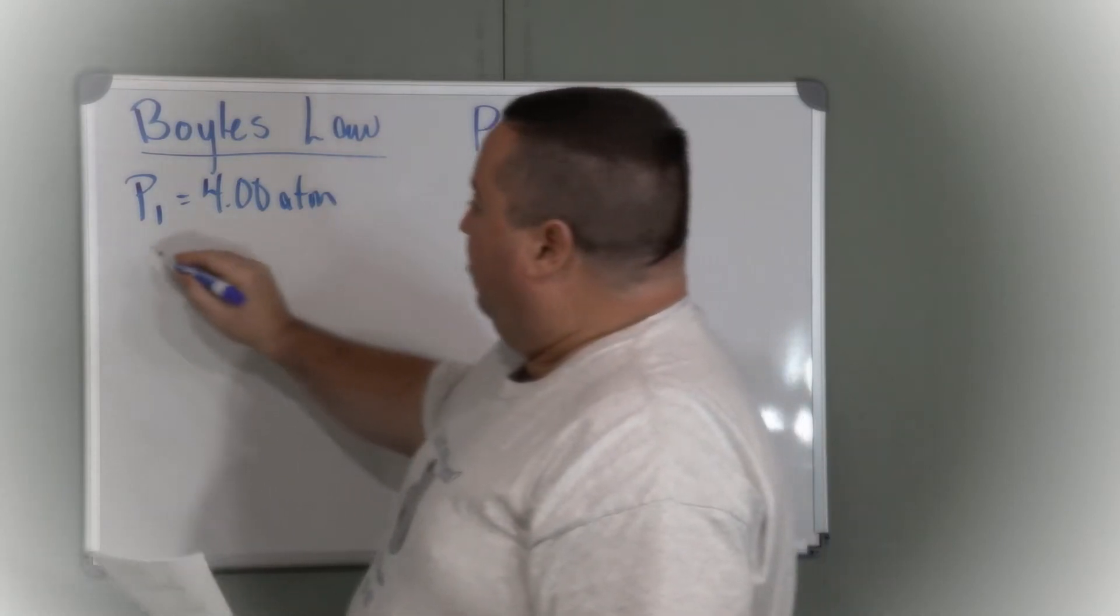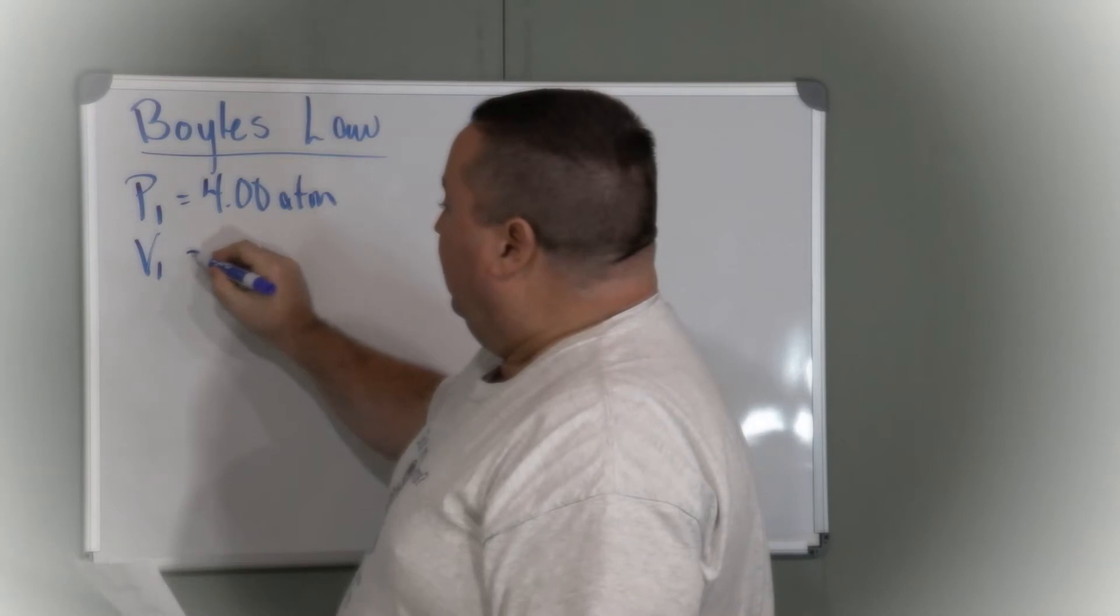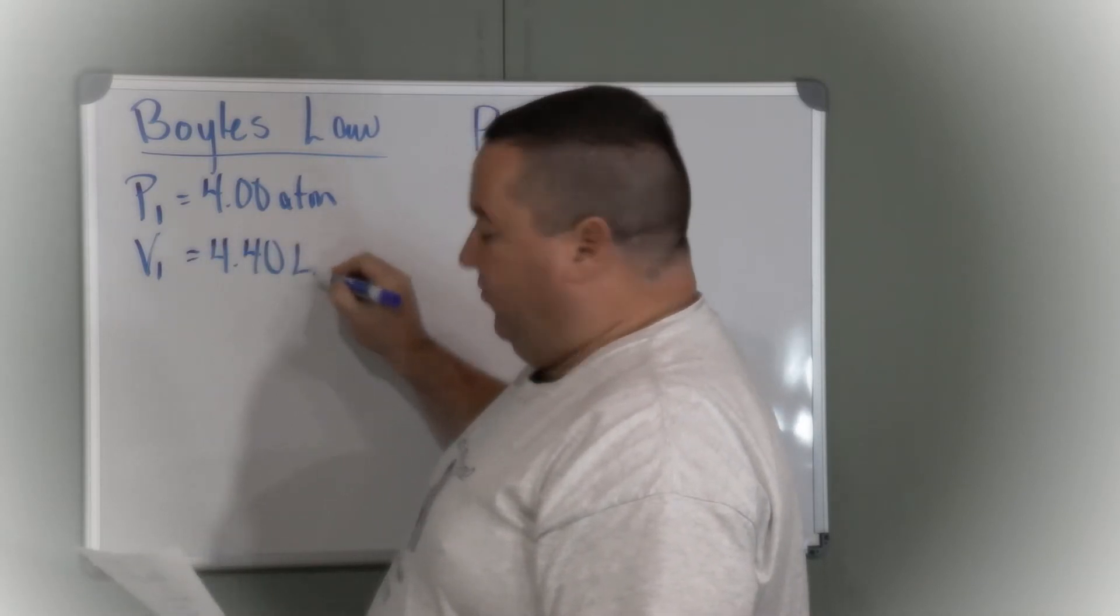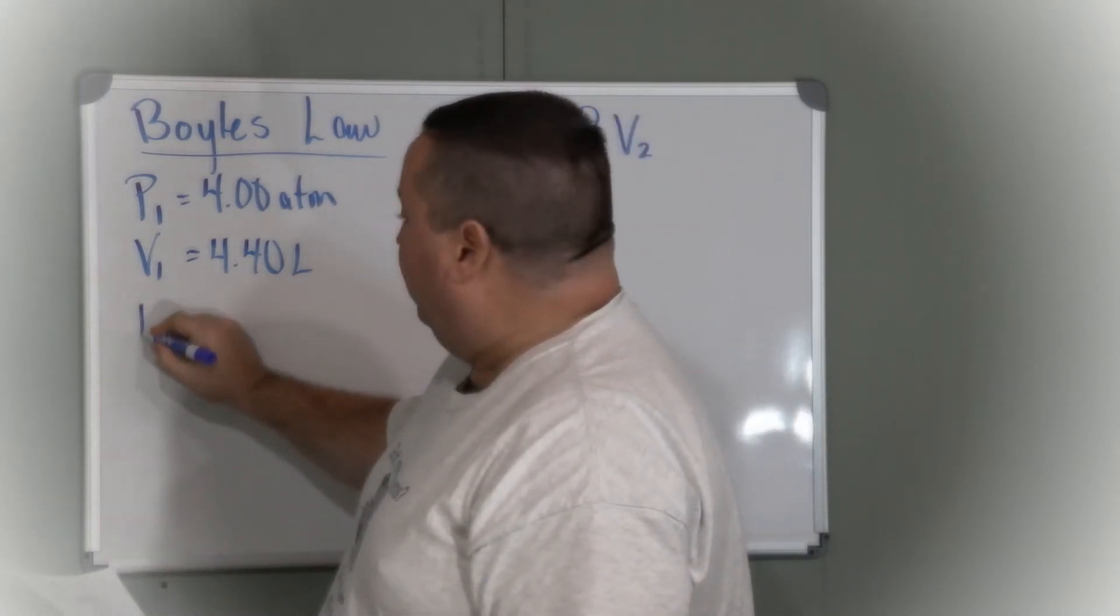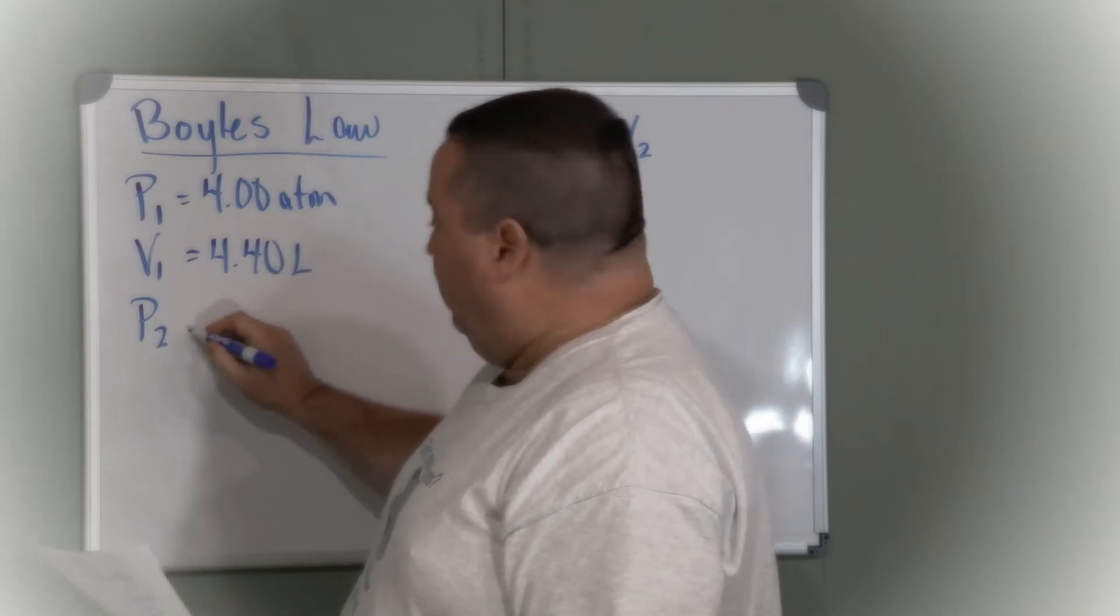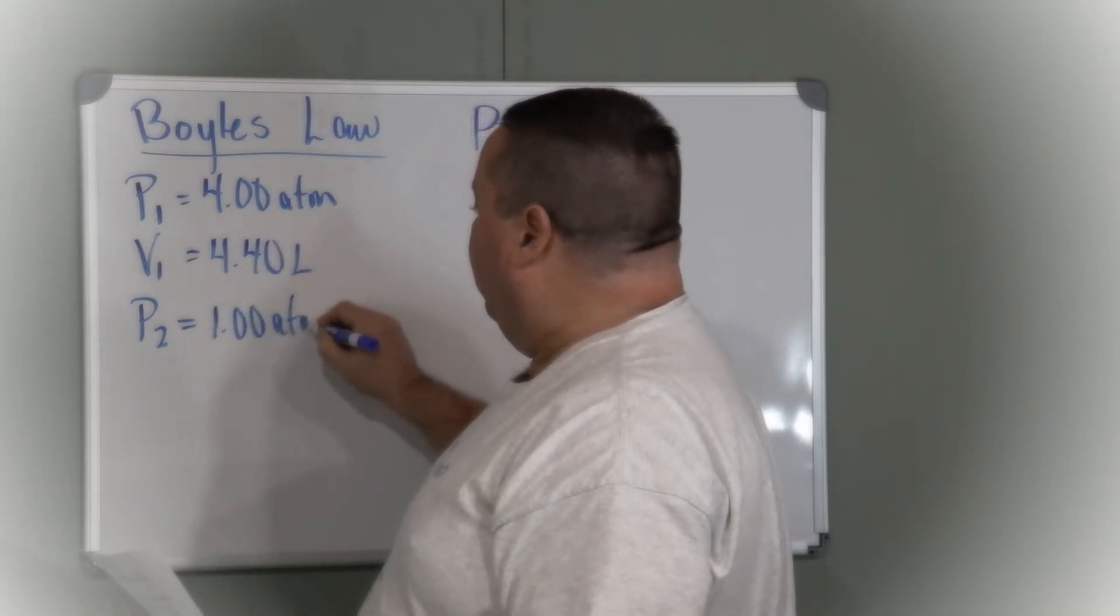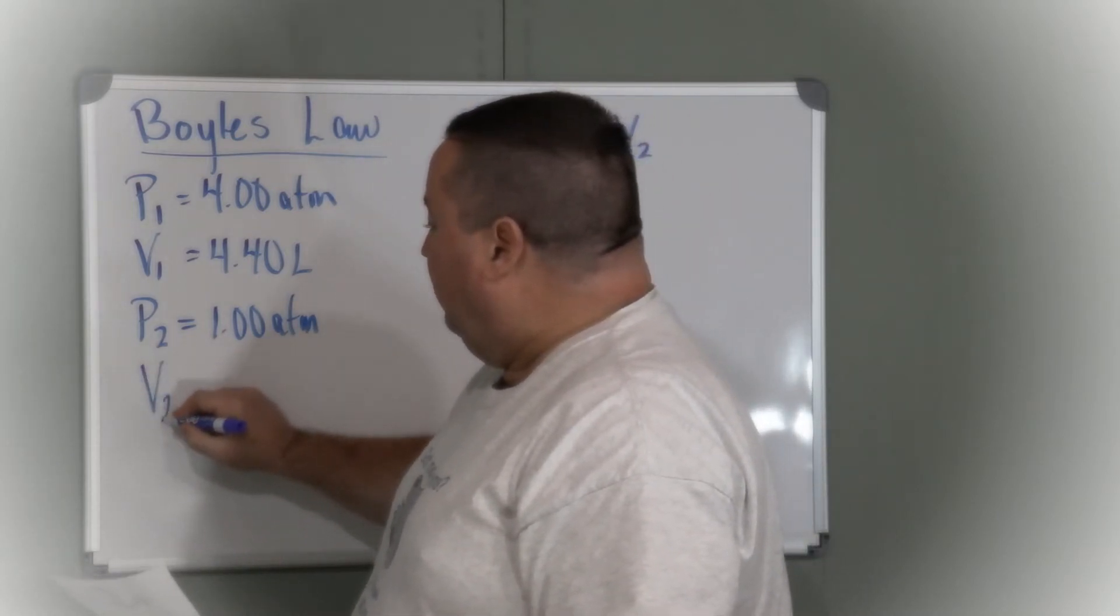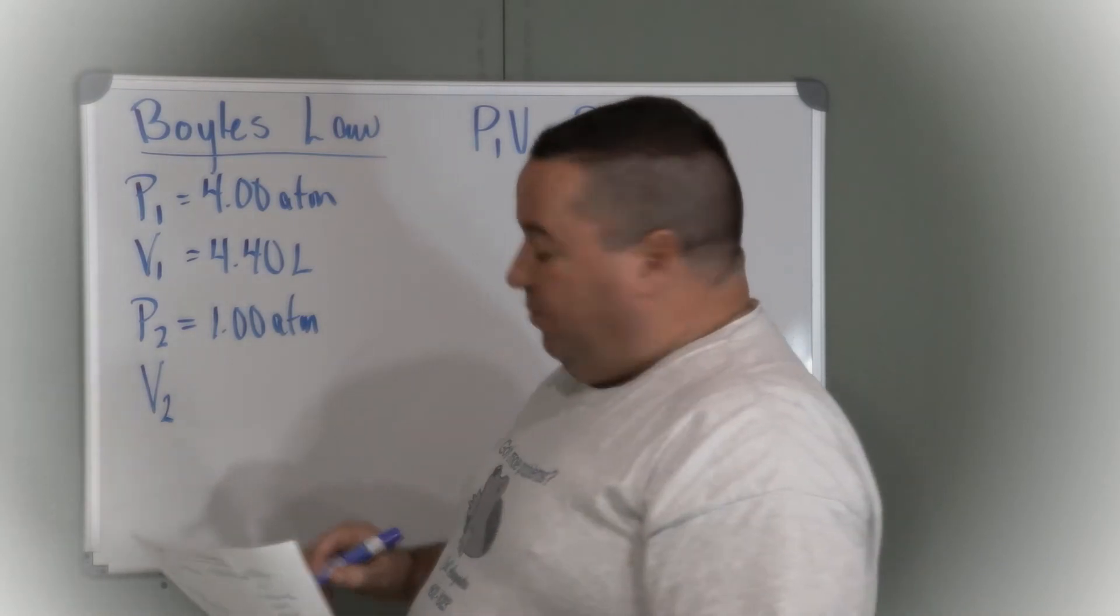The original volume at depth in the diver's lungs is 4.40 liters. The pressure at the surface after the diver ascends, P2, is 1.00 atmospheres. And we're asked for V2, the final volume that the air in the diver's lungs would occupy at the surface.